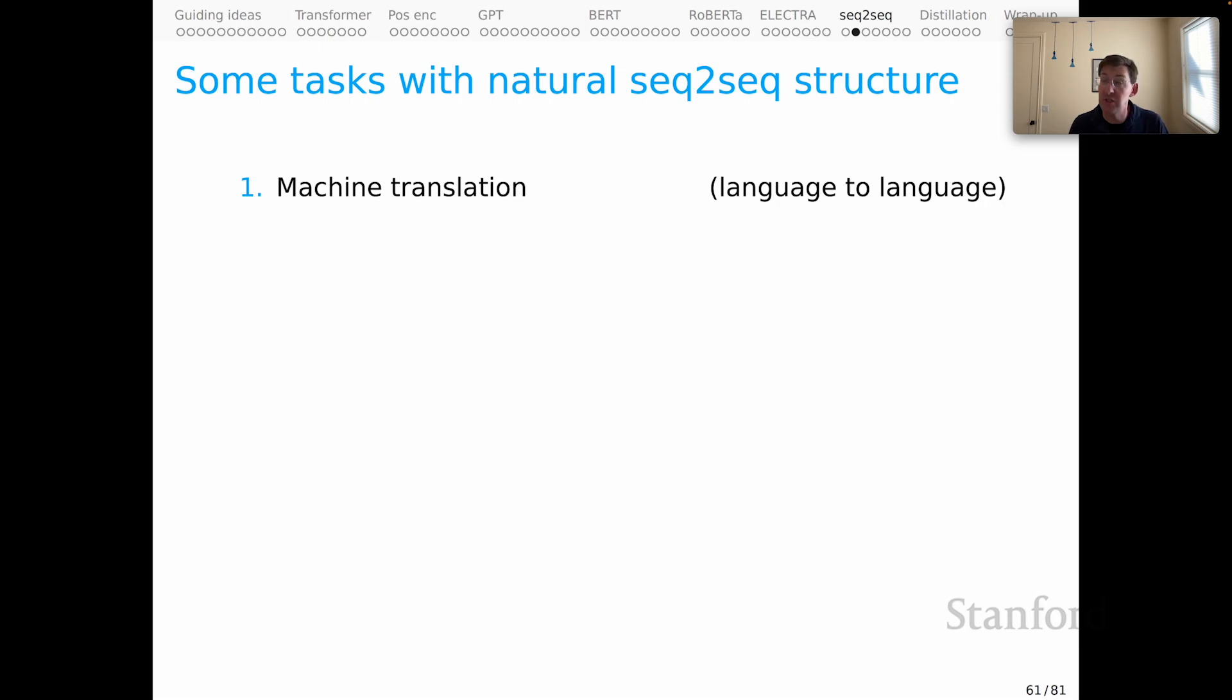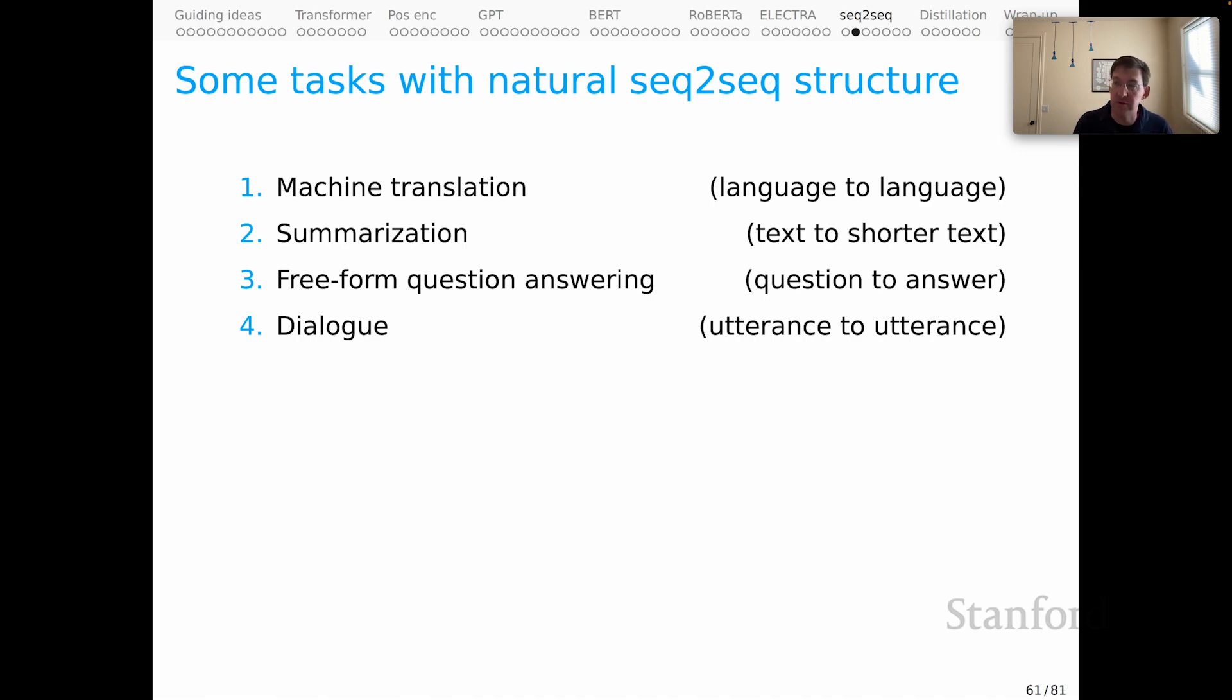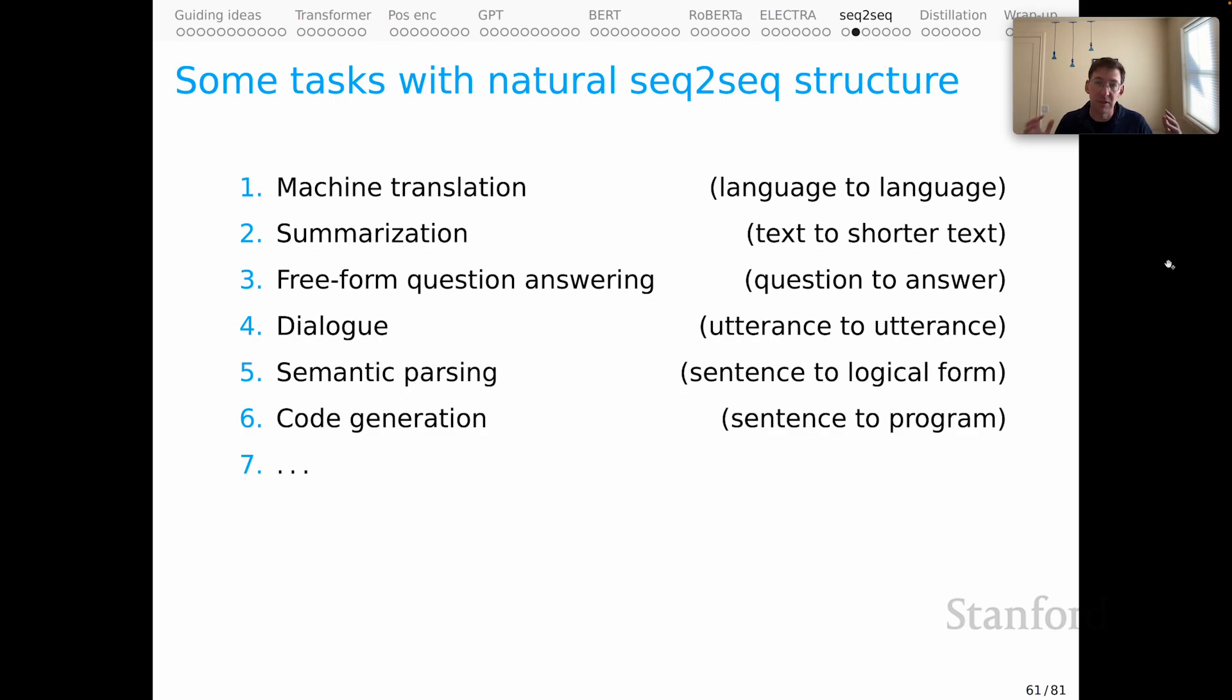Seq-to-seq tasks include machine translation, of course, where a text in one language comes in and we would like to produce text in another language as the output. Summarization, also a classic seq-to-seq problem where a long text comes in and a presumably shorter one comes out. Free-form question answering, where we're trying to generate answers from questions with contextual information. Dialogue, of course, utterances to utterances. Semantic parsing could also be thought of as a seq-to-seq task, where natural language sentences come in and we try to map them to their logical forms. Related tasks could be code generation, where a natural language sentence comes in and we try to produce a program that the sentence is describing.